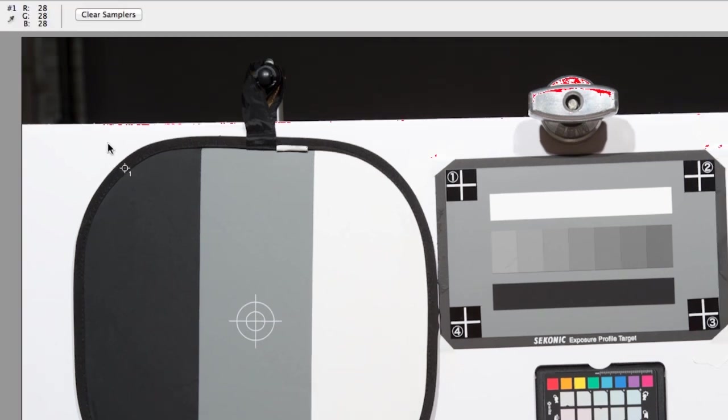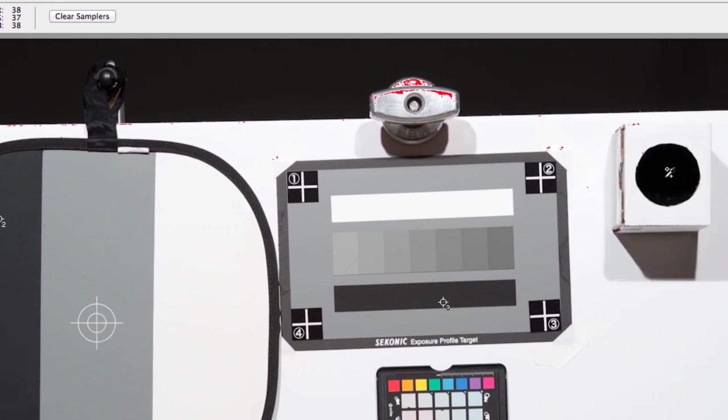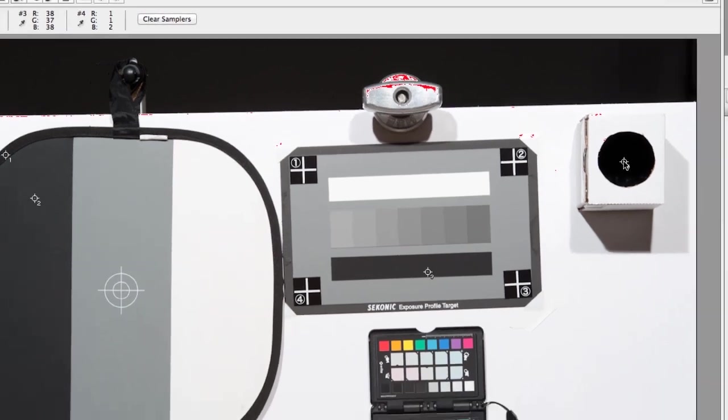But now look what happens to the blacks. I'm going to push one on the edge there. That's at 28. This black, 41. This black down here, 38. And then in our black trap, it's already starting to show at 1. So it's even being pushed over. So we gained our whites, but we lost our blacks. So the point is, if you want to get a really high contrast image where we have absolute black blacks and absolute white whites, you're just not going to get that in the camera. It won't work.